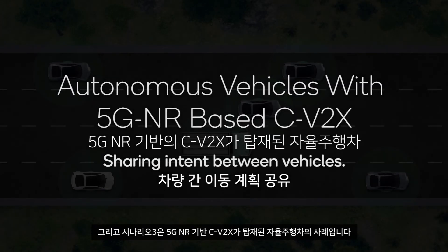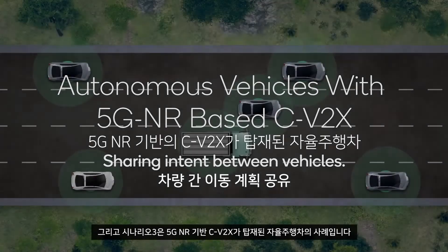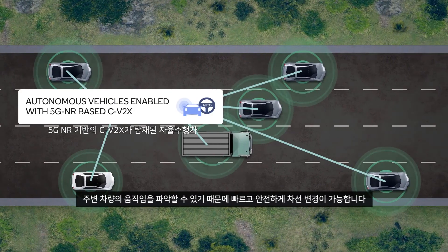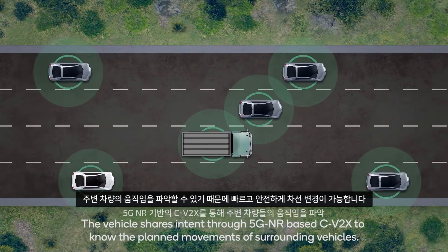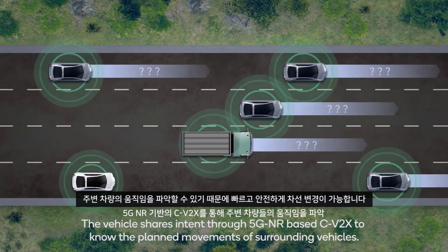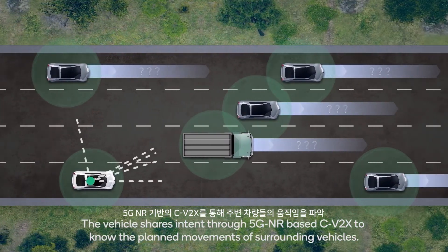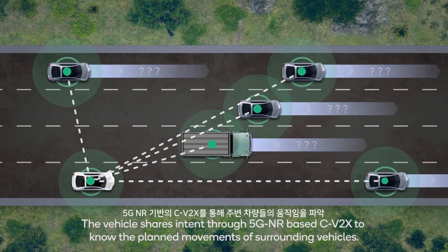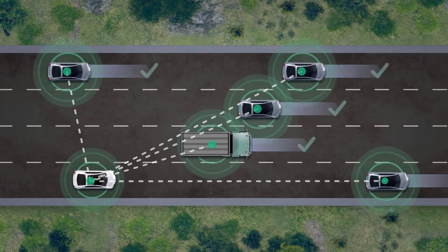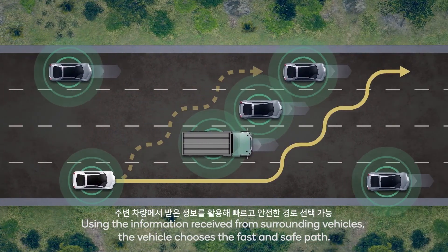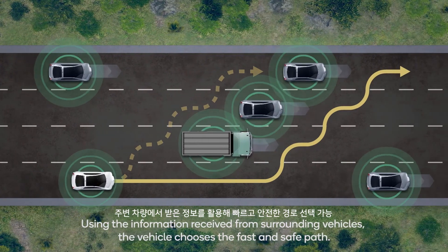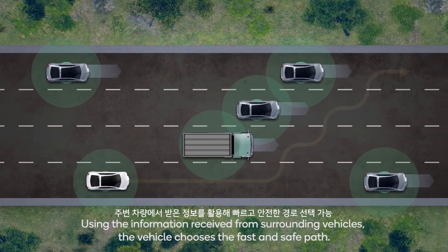Scenario 3 demonstrates autonomous vehicles with 5G NR-based CV2X. The vehicle can choose a quick and safe lane change as it is aware of the planned movements of surrounding vehicles.